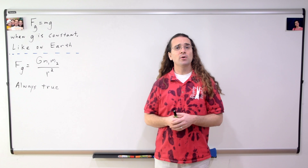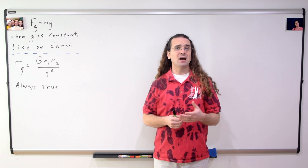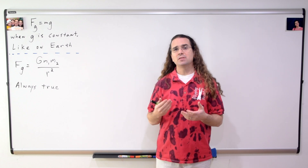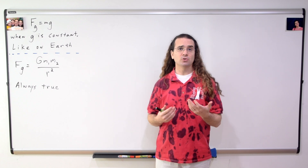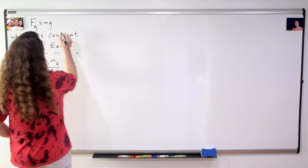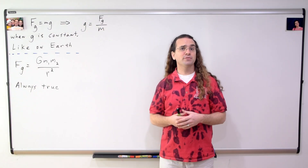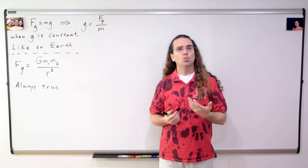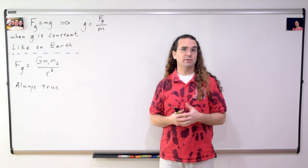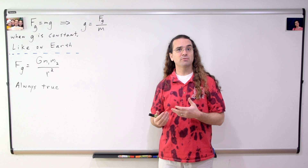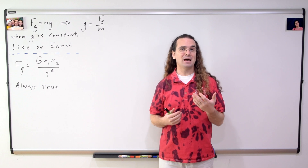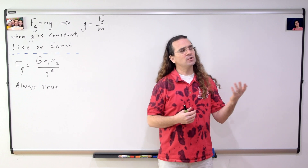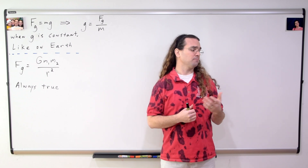Now we are going to introduce the concept of the gravitational field. Let's start with the simpler of the two equations. If we divide the equation for the force of gravity by mass, we get the acceleration due to gravity equals the force of gravity divided by mass. Billy, what are the units for little g here?